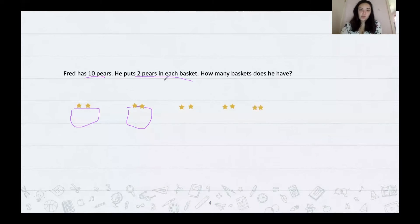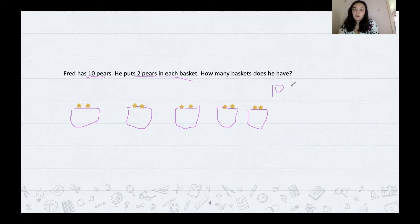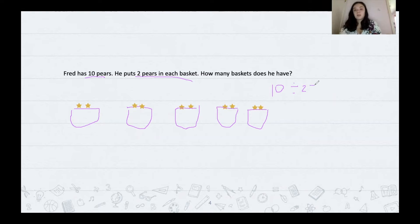So that's two pears in each basket. I'll draw the rest of my baskets and write my division sentence: 10 divided by two, making groups of two. Now how many groups do I have? I count one, two, three, four, five baskets. So that means I have five groups.